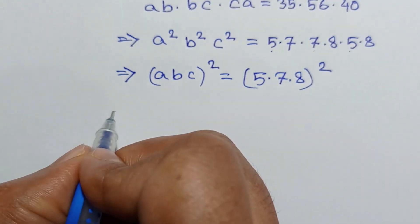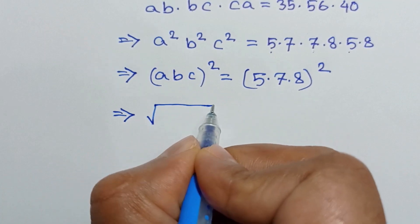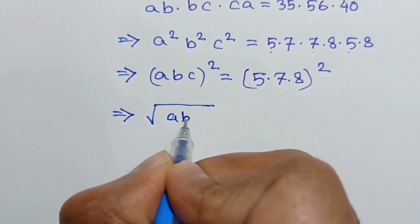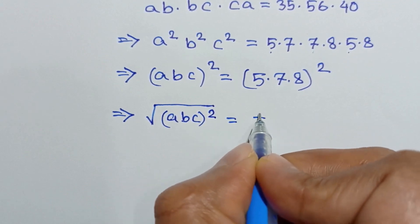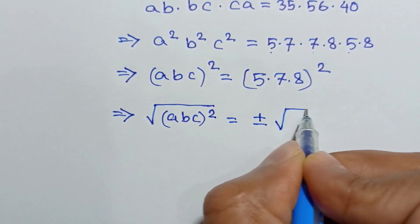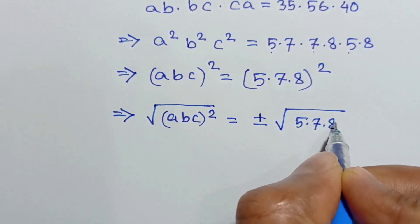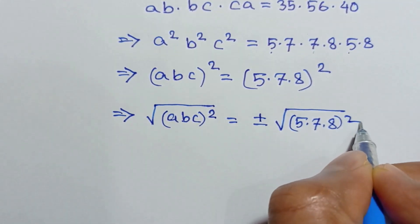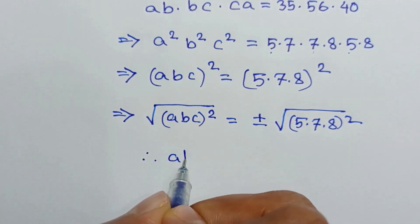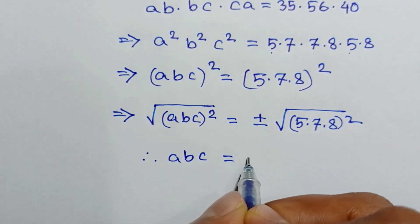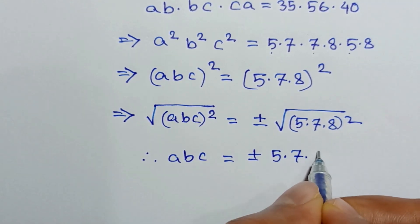Now if we take a square root of both sides, we can write: the square root of abc whole squared is equal to plus or minus the square root of 5 times 7 times 8 whole squared. So we get abc is equal to plus or minus 5 times 7 times 8. Let's call this equation number 4.